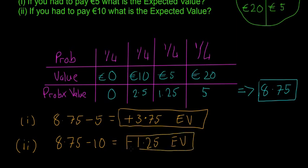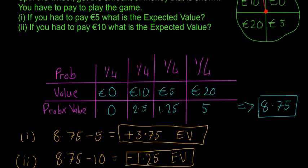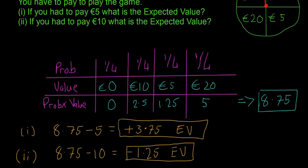So in this case it wouldn't be a good game to play. It'll be a good game for the circus owner but not for ourselves. So that's the kind of basic idea behind expected value.